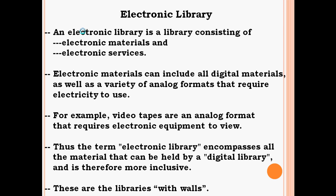The electronic library. An electronic library is a library consisting of electronic materials and providing electronic services. Electronic materials can include all digital materials as well as a variety of analog formats that require electricity to use. For example, video tapes are in analog format that requires electronic equipment to view. Thus the term electronic library encompasses all the material that can be held by a digital library and is therefore more inclusive. These are the libraries with walls.